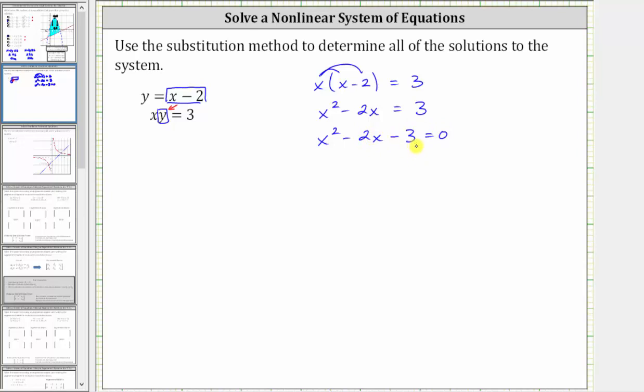And now if this does factor, it will factor to two binomial factors. The factors of x squared are x and x. The second positions will be the factors of negative three that add to negative two, which are negative three and positive one.